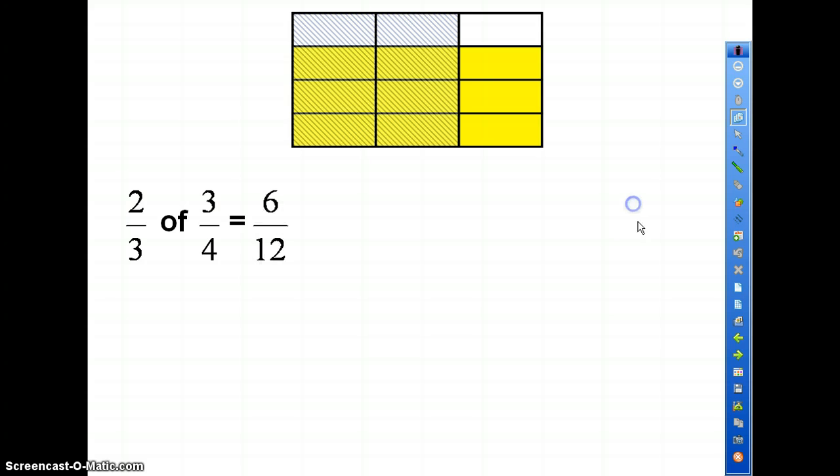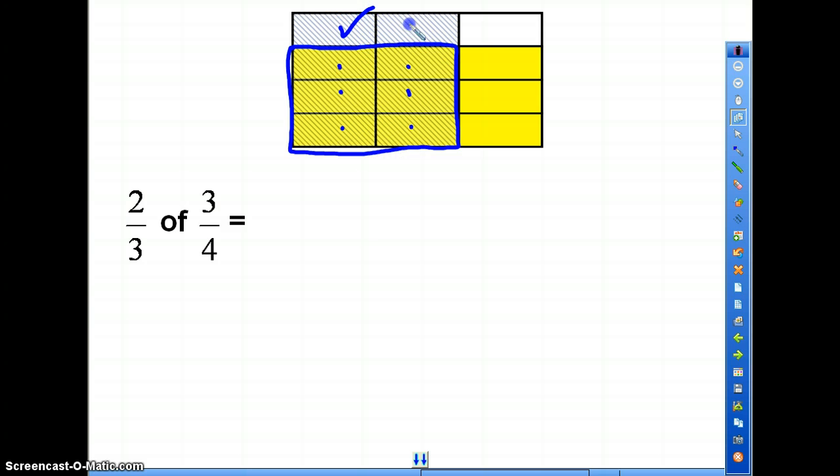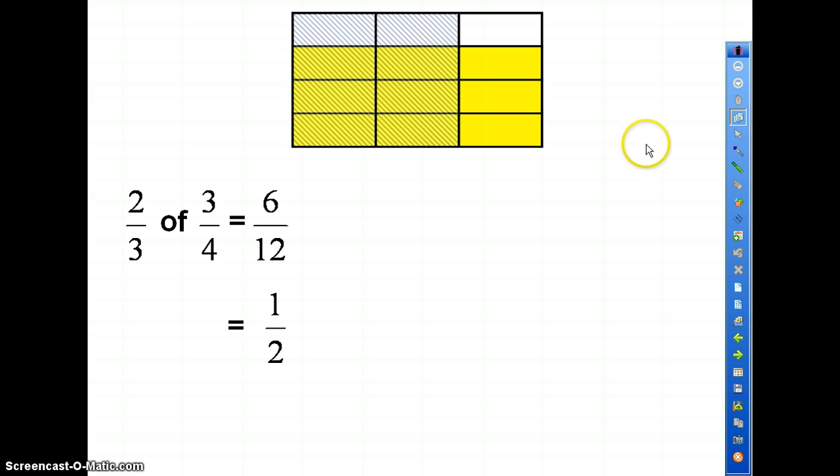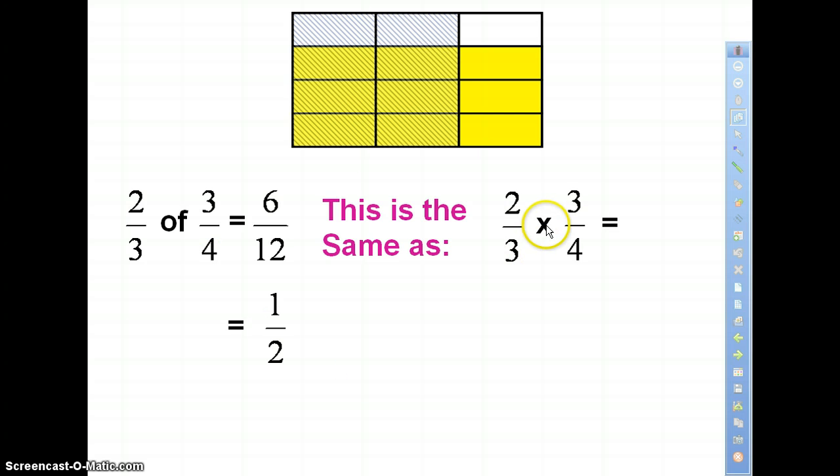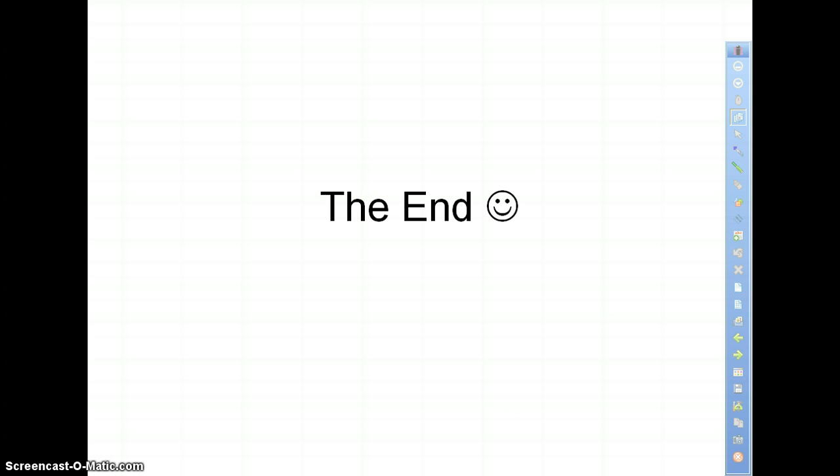So six twelfths reduces to one-half of the class playing basketball. This is the same as two-thirds of three-fourths is the same as multiplying. Let's put a dot in there. Take tops times tops and bottoms times bottoms, which gives us six over twelve, which is the same as one-half of the class. Pretty easy. All right, good luck with this, guys.